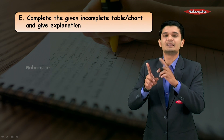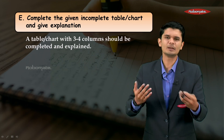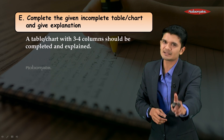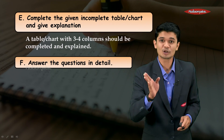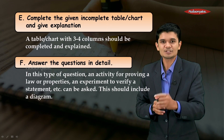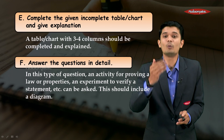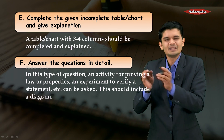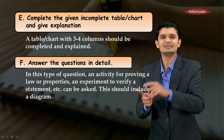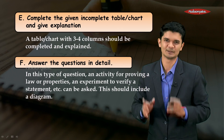You should also know that complete the given incomplete chart and give an explanation may appear. You'll have a simple chart with approximately three to four columns — complete those columns and explain if asked. You'll also come across answer the questions in detail, where you might be asked for an activity for proving a law or property, or an experiment to verify a statement. Make sure in these five-mark questions to always include a diagram related to the question in your answer paper to ensure complete five marks.